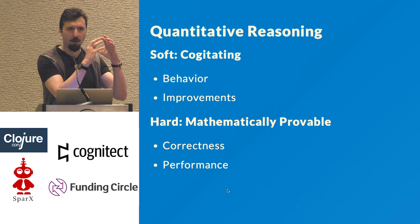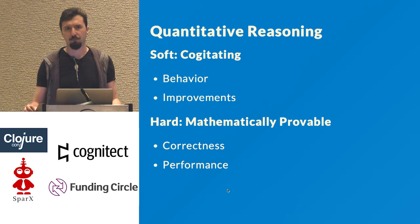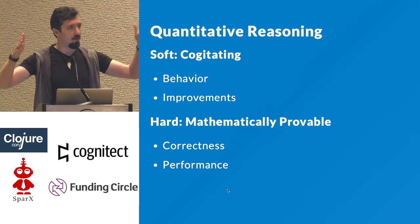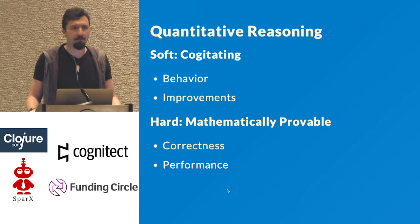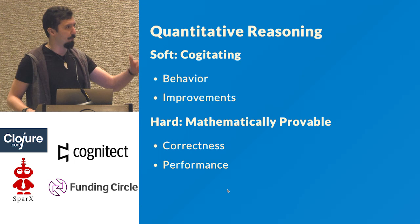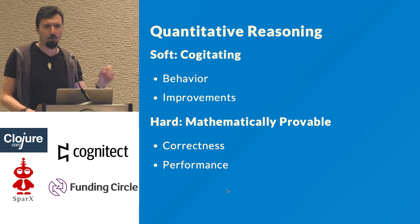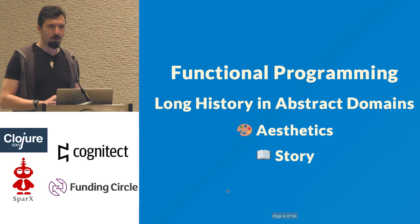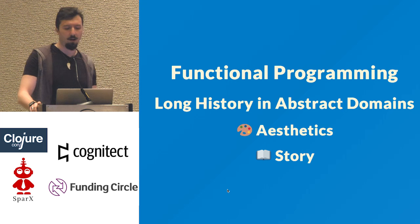There are also hard benefits, like you can mathematically prove that a function is correct. If it's a pure function, you have something coming in and something going out — you don't have a third vector with some arbitrary inference within your function. So you can mathematically prove correctness, and you can also analyze performance mathematically and get quantitative, valuable information. But what I'm here to talk about today is qualitative reasoning.